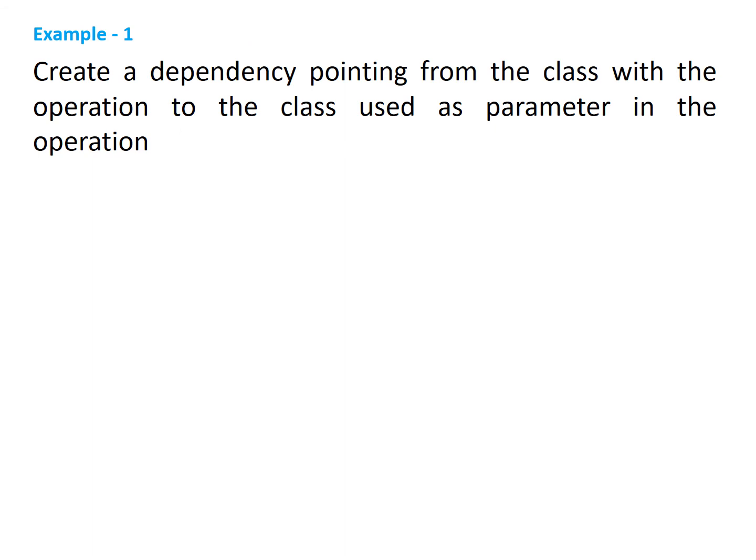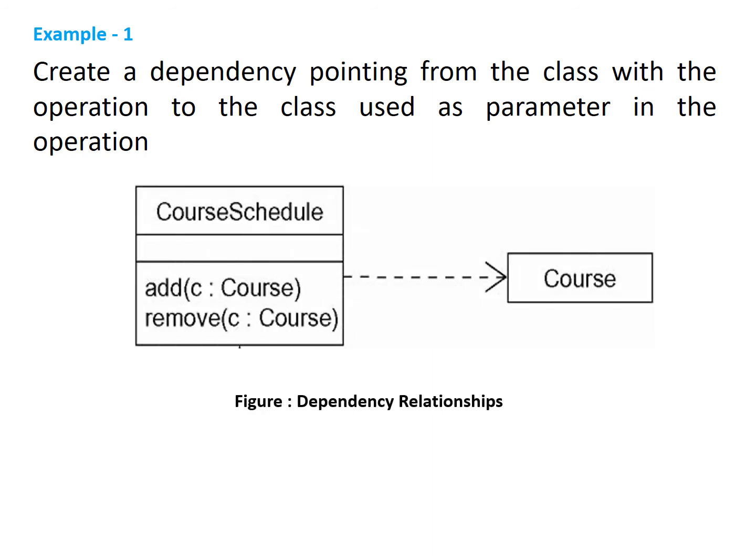Now we will see one example: create a dependency pointing from the class with the operation to the class used as a parameter in the operation. Here, CourseSchedule is one class and Course is another class. In the CourseSchedule class there are two operations — add and remove. These two operations require an argument of type Course. Therefore, there is a dependency relationship between the CourseSchedule class and the Course class, meaning that if you make any changes in the Course class, those changes must automatically affect the CourseSchedule class.